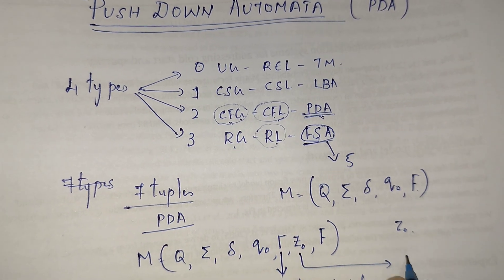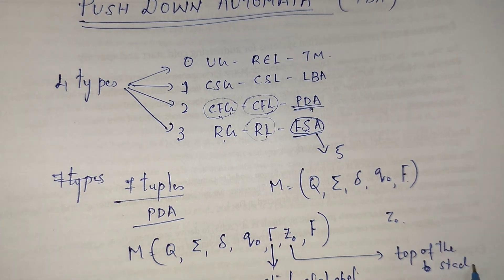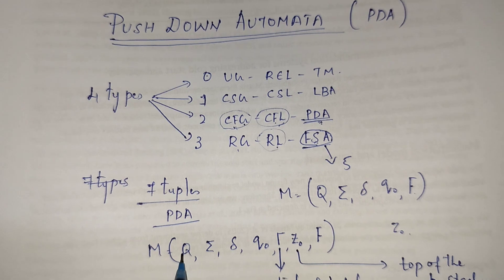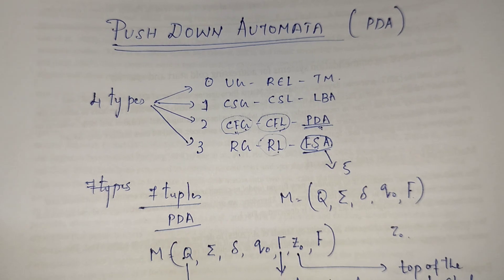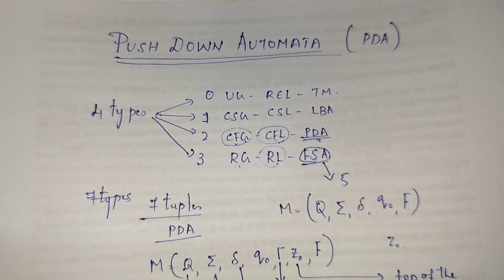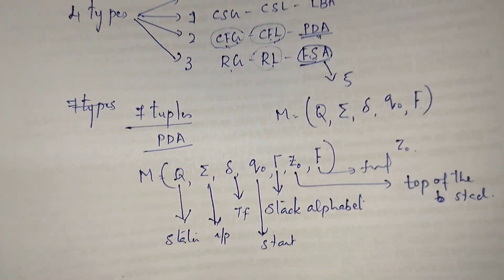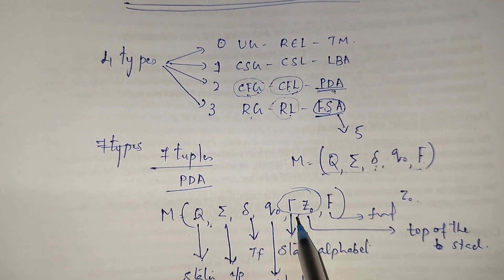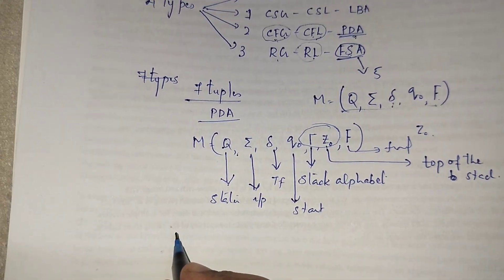Z₀ represents the top of the stack — the stack bottom marker. In the seven tuples of a pushdown automata: Q is the set of a finite number of states, Σ is the set of input symbols, δ is the transition function, q₀ is the starting state, F is the set of final states. These are similar to finite automata, with the two extra tuples τ (stack alphabet) and Z₀ (top of stack).